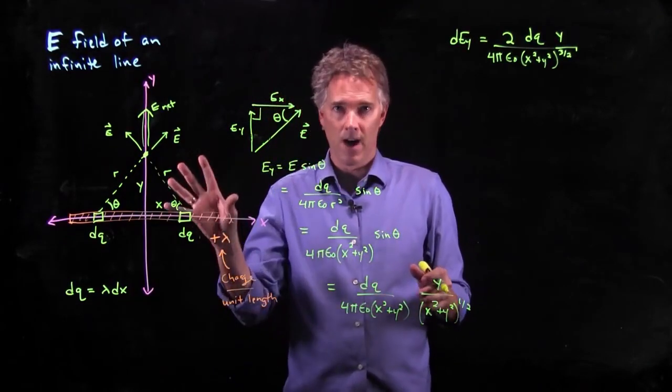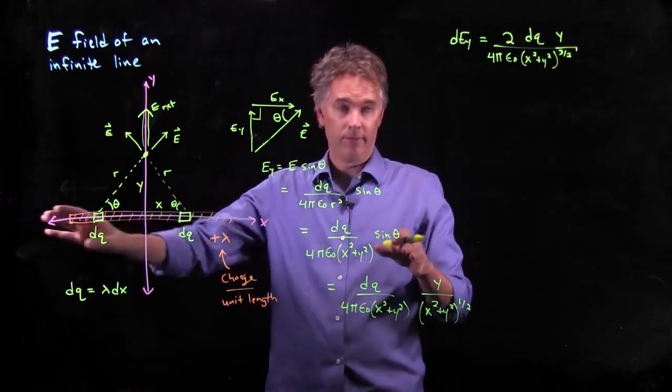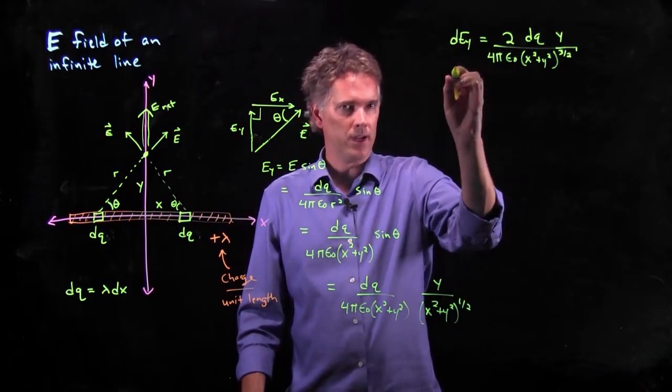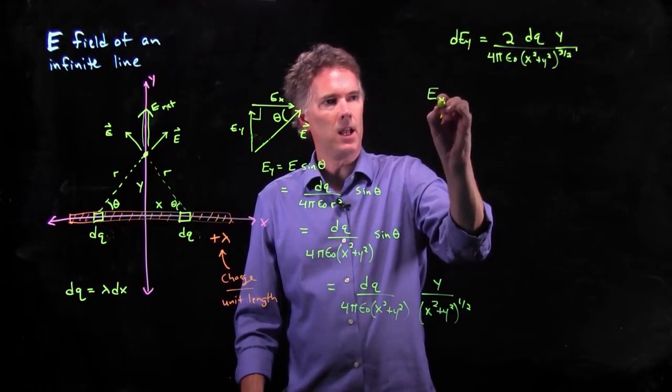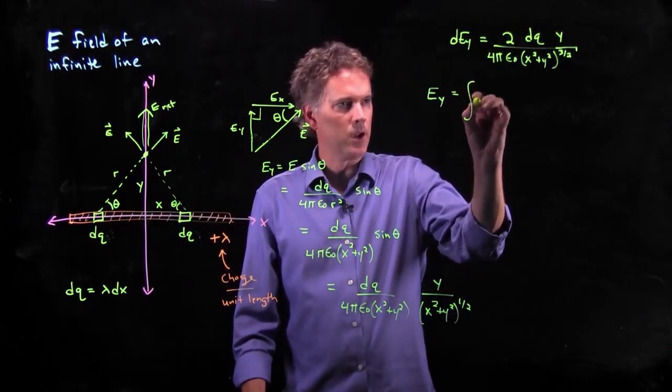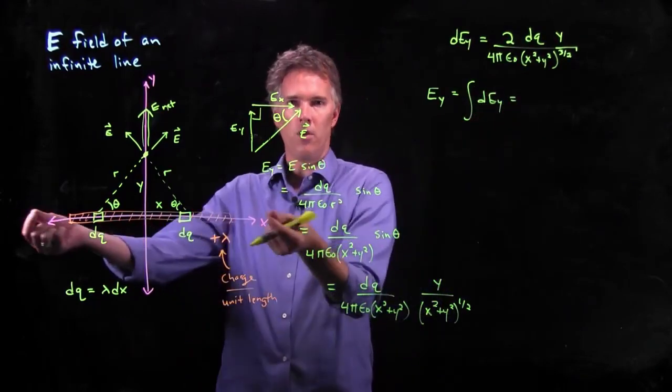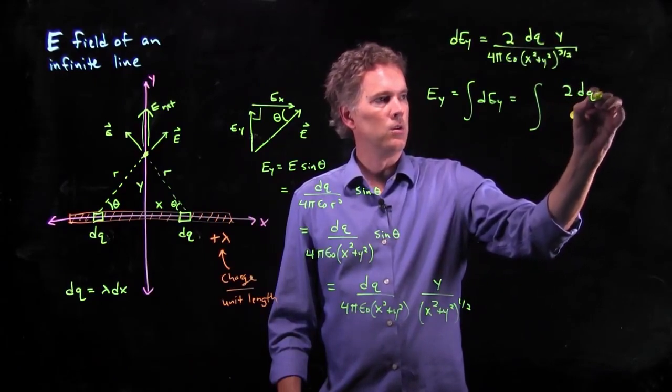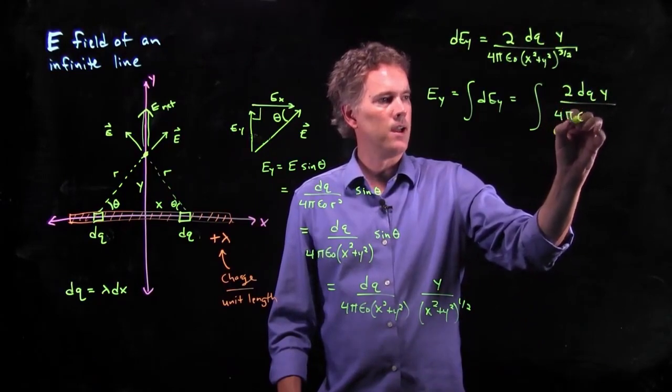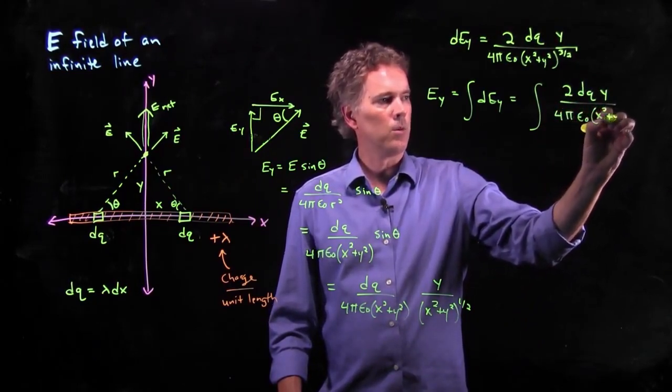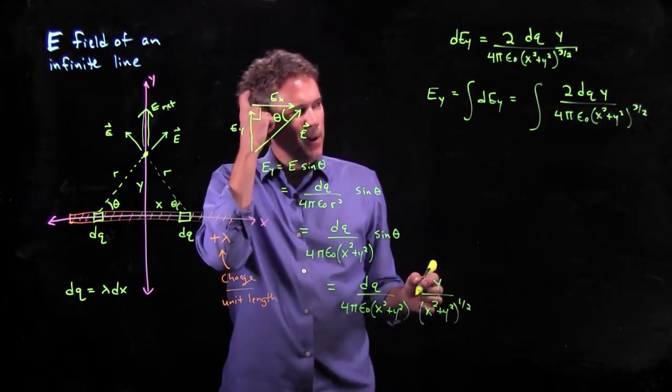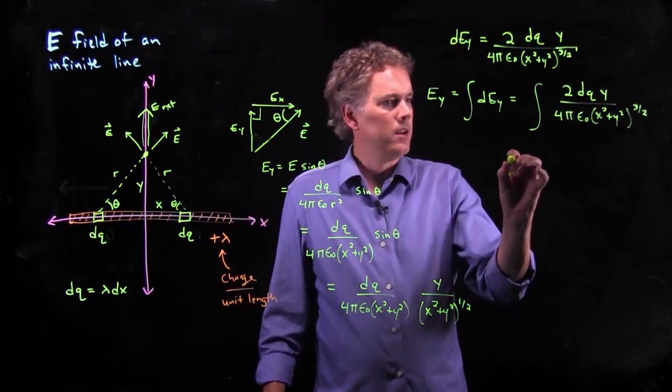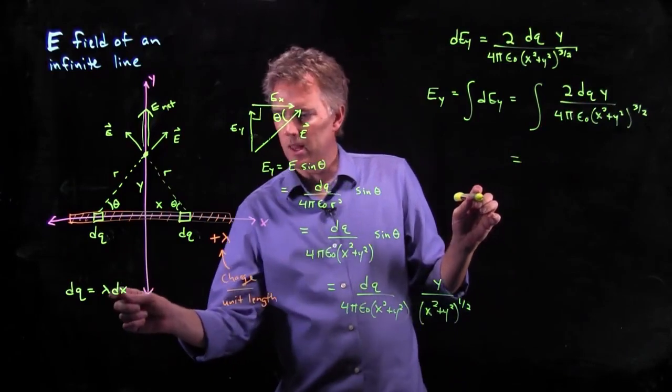Now, how do we find the net electric field from all this stuff, from the complete line? Well, that is pretty tricky. The way you do it is you integrate both sides. If I want to find the net electric field up there, I have to integrate d e y over all the contributions here, which means I have to integrate this thing to d q y over 4π epsilon not x squared plus y squared to the 3 halves. But I don't really know how much total charge there is. Well, I do. I know it's a lot.